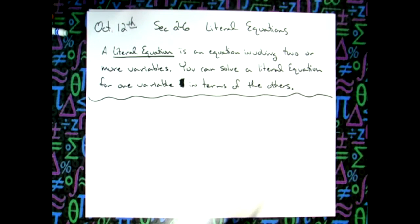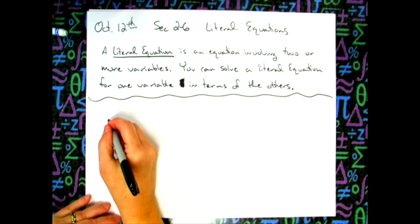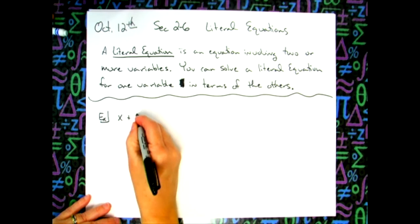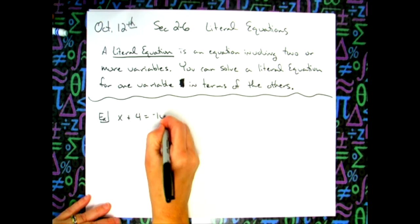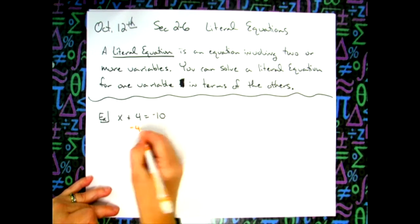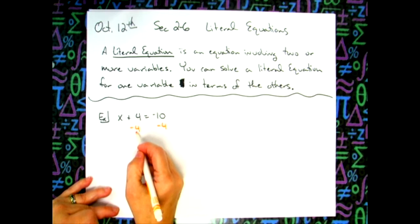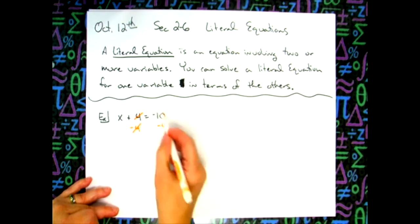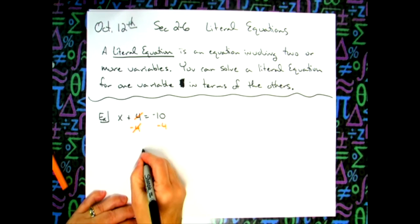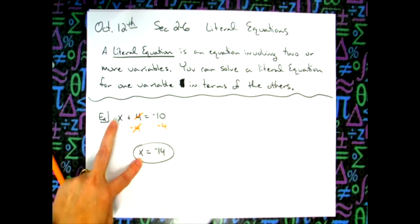Let's look at something as simple as a one-step equation we've been solving for a long time: x plus four equals negative ten. We subtract four from both sides — four minus four on the left cancels — and then we do the math on the right: x equals negative fourteen. We solved for x.